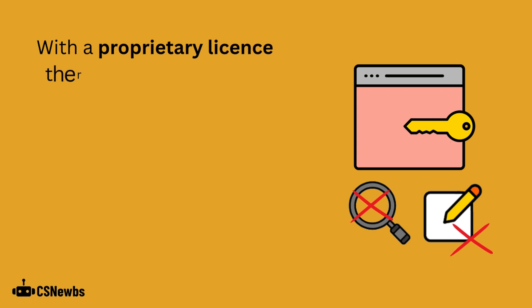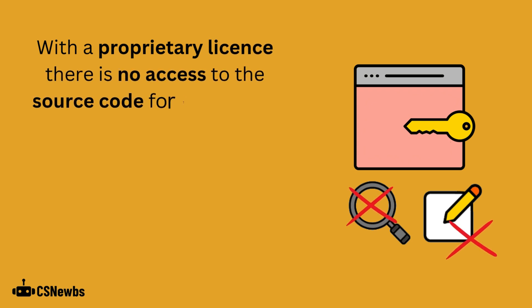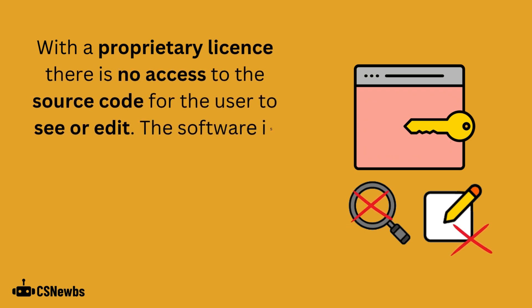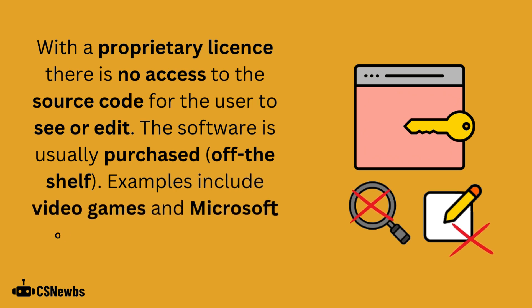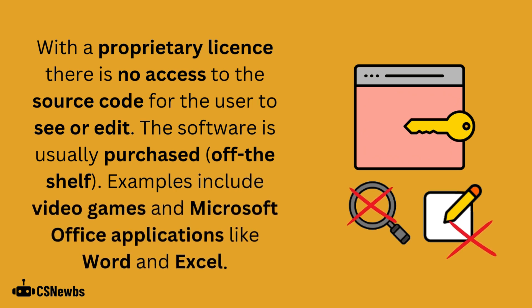With a proprietary license there is no access to the source code for the user to see or edit. The software is usually purchased — this is known as off-the-shelf. Examples include video games and Microsoft Office applications like Word and Excel.